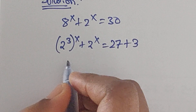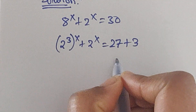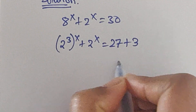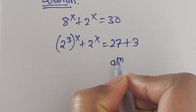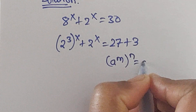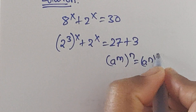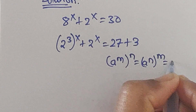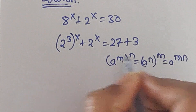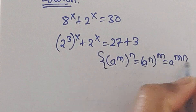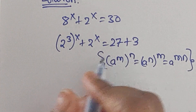Now here we can use this formula: a to the power of m, whole to the power of n, equals a to the power of n, whole to the power of m, which equals a to the power of m times n. We will use this formula here.